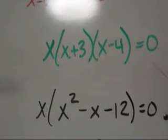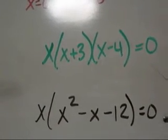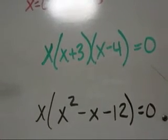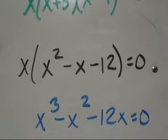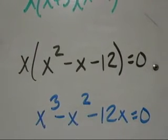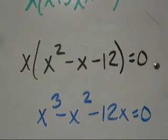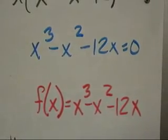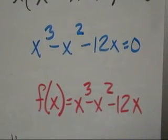So foiling, we get x squared minus x minus 12 is equal to 0. You bring down that common x and distribute it. So as an equation, we get x cubed minus x squared minus 12x equals 0. And as a function, f of x is equal to x cubed minus x squared minus 12x.